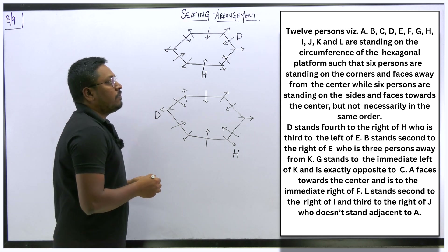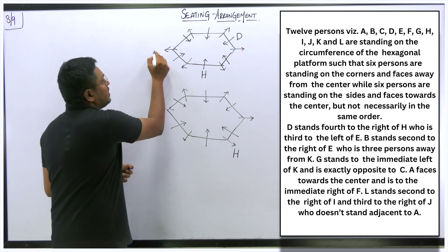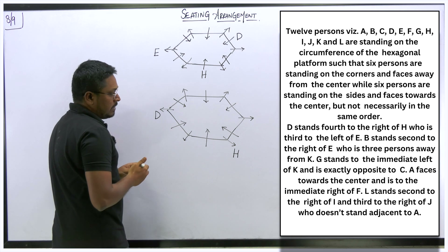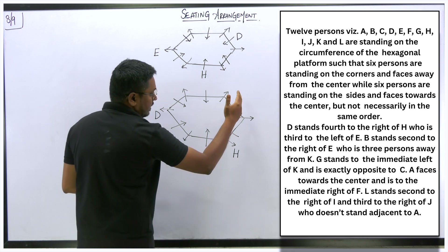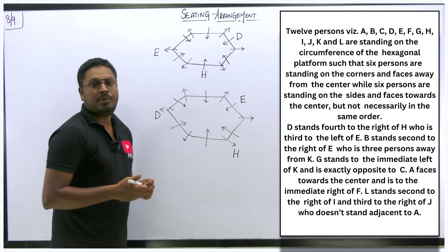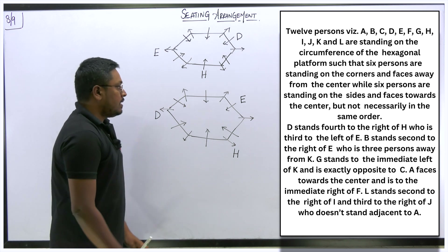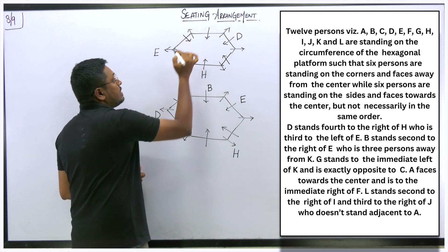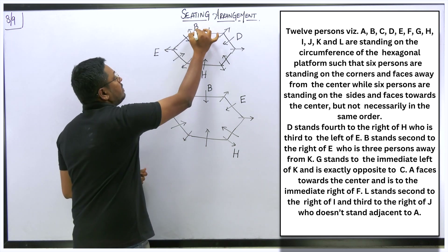Next clue: H is third to the left of E. So E's left-hand side at the third place is H. I fix E in both diagrams so that the third place to E's left is H. Then: B stands second to the right of E. So E's right-hand side at the second place is B. I can fix B in both diagrams accordingly.